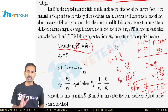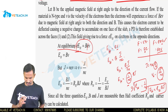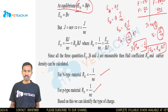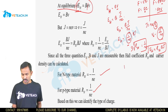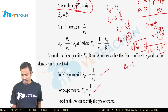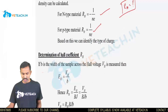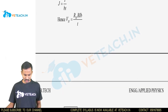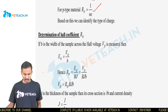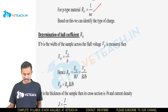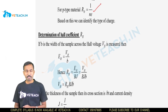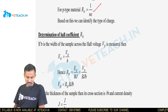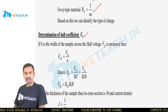The quantity 1/(ne) is known as the Hall coefficient, denoted R_H. Therefore E_H = R_H × B × J. The Hall coefficient R_H is determined from this relation. If R_H is negative, the material is an n-type semiconductor; if R_H is positive, it is a p-type semiconductor.